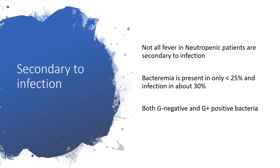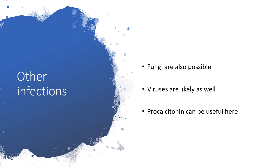Not all fever in neutropenic patients is secondary to infection. Bacteria will be present in only less than 25 percent, and infection in about 30 percent. Both gram-negative and gram-positive bacteria could be found here. Fungi and viruses are not excluded. Procalcitonin will be very useful to indicate whether we are dealing with bacteria or virus, and whether our antibiotics are working or not.